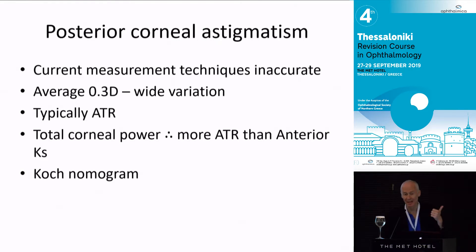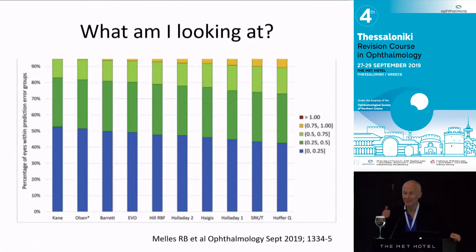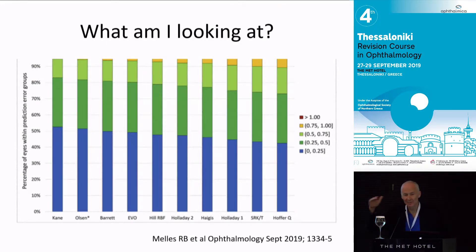So Haigis is what I'm doing now, using the Barrett calculator for the toric lenses, and that works pretty well. That was the point about corneal astigmatism — don't do a double correction. The Barrett calculator is available online. So what am I looking at? What am I excited by? This is the generation beyond Haigis, which is where machine learning is coming in.